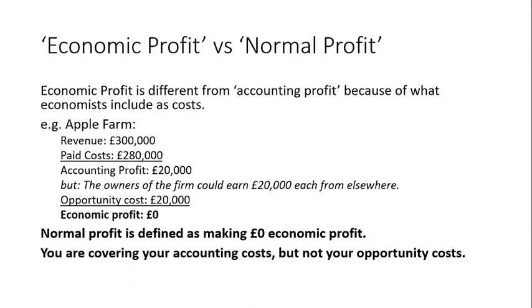Normal profit is defined as making zero economic profit: you are covering your accounting costs but not your opportunity costs, so when you include opportunity costs you're making zero. The other way to define normal profit: it is the level of profit necessary for firms to stay in the industry in the long run. If you're only covering your opportunity costs, you're going to stay in that business — you're not going to leave because you can't make more money elsewhere.